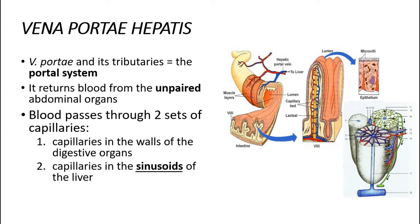The venoporta and its distributaries form the portal system, which collects blood from the unpaired organs of the abdominal cavity: the gastrointestinal tract, the spleen, the pancreas, and the gallbladder. This system is different because it contains two sets of capillaries. The first set is inside the digestive organs and collects nutrients, insulin, toxins, and destroyed erythrocytes from the spleen. This blood then travels through the portal veins toward the liver, where it passes through a second set of capillaries — the sinuses of the liver — where it is cleaned up.